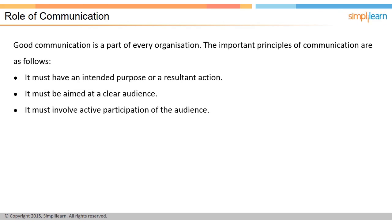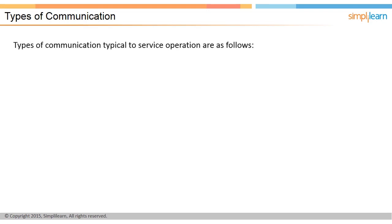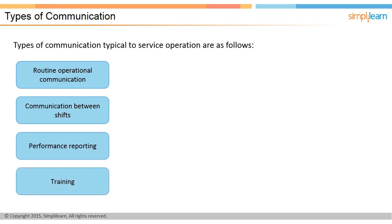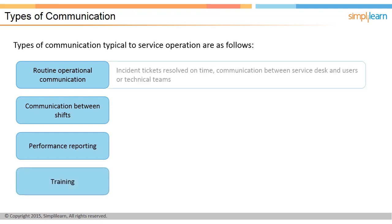In the next screen, let us discuss the types of communication typical to service operation. Some types of communication are typical to service operation. They are: routine operational communication, communication between shifts, performance reporting, and training. Routine operational communication includes incident tickets resolved on time and communication between service desks and users or technical teams.